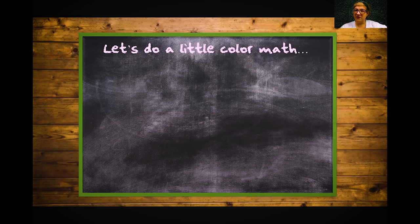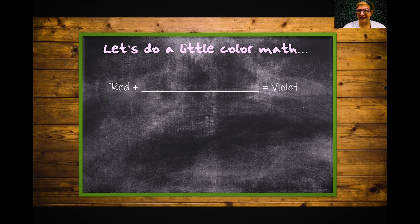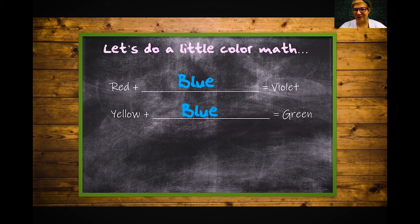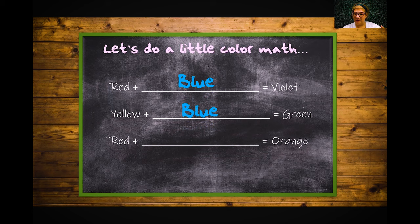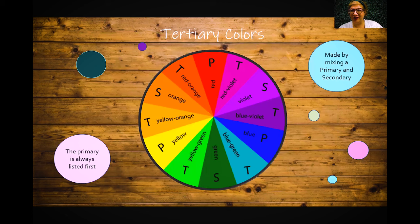Color math is just an equation. If I have red and I want to get to violet, what am I missing? Red plus blue equals violet. Yellow plus what equals green? Yellow plus blue equals green. Red plus yellow equals orange. It's that simple — we're going to get a little more complicated in a second, but that is color math.